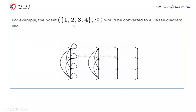For example, the poset {1, 2, 3, 4} with the relation less than or equal to would be converted into a Hasse diagram as follows.